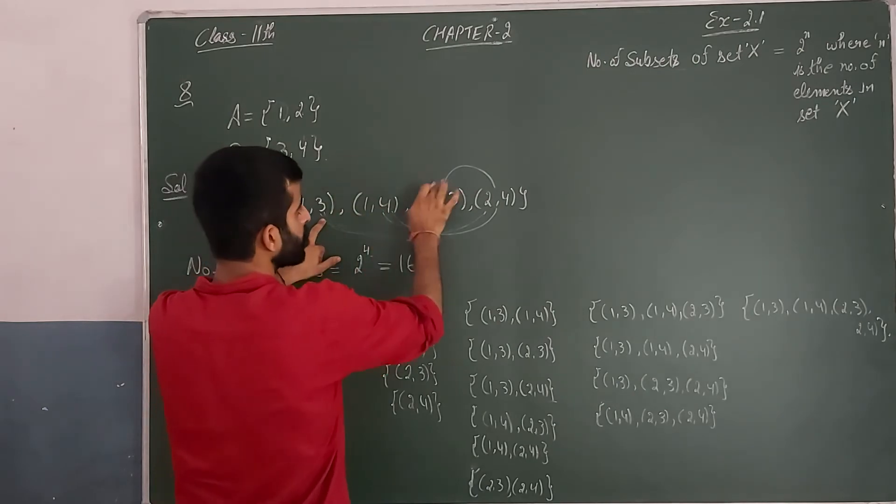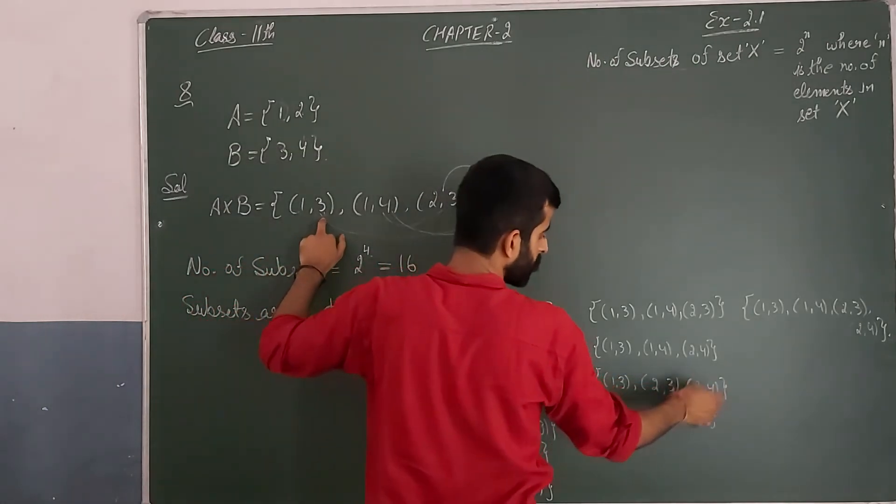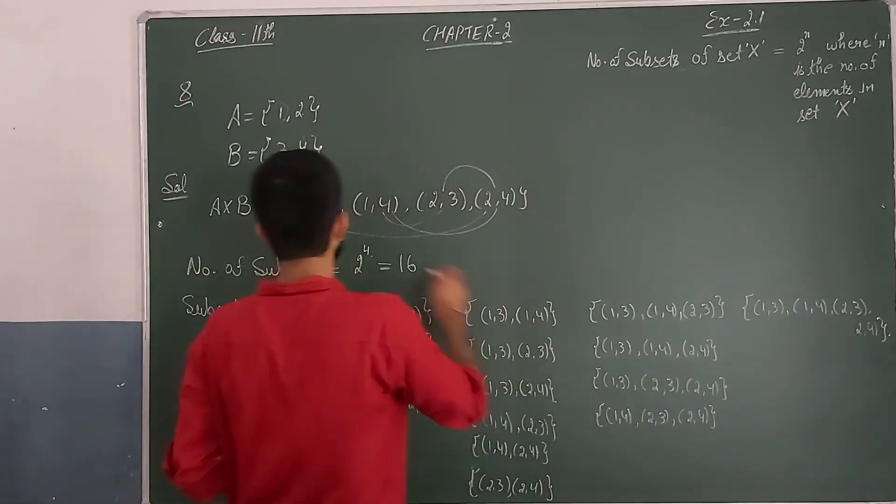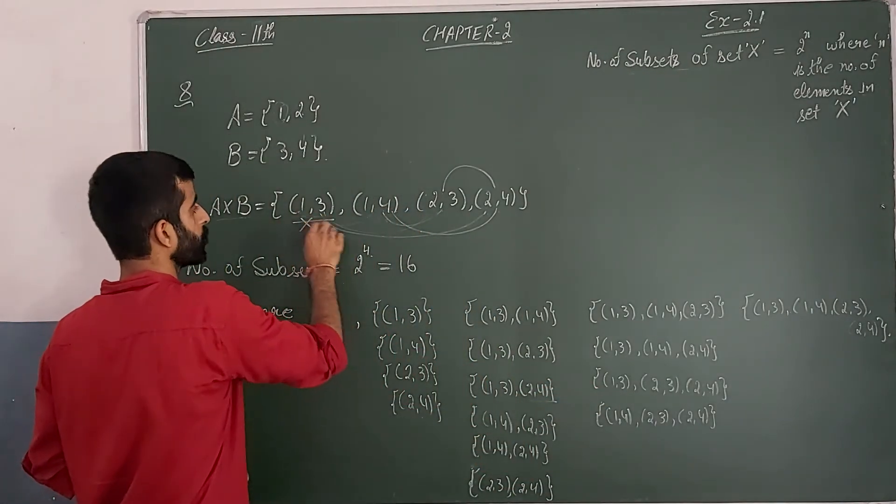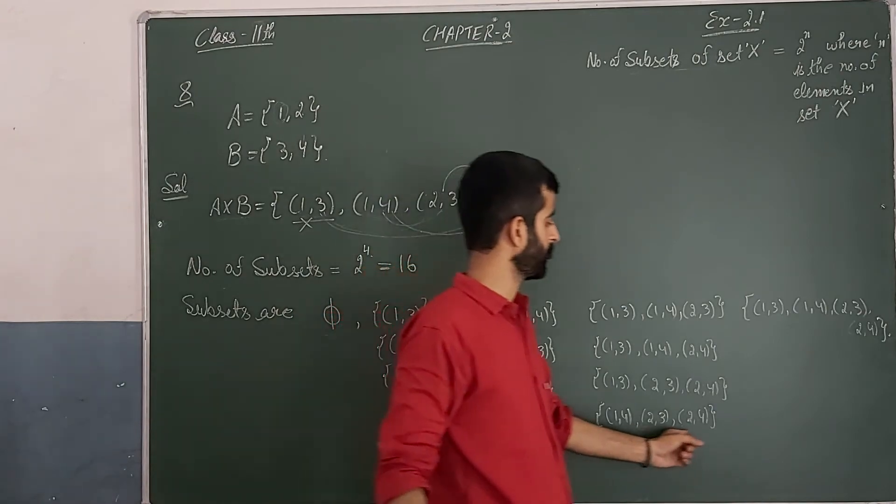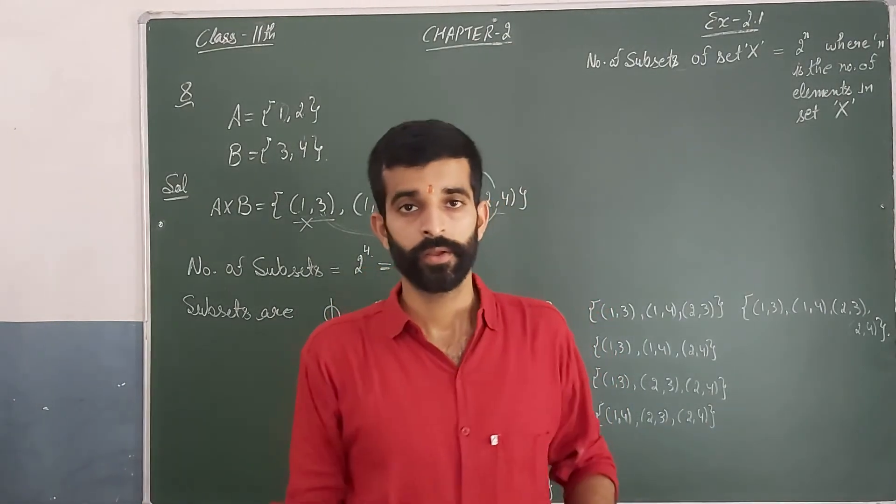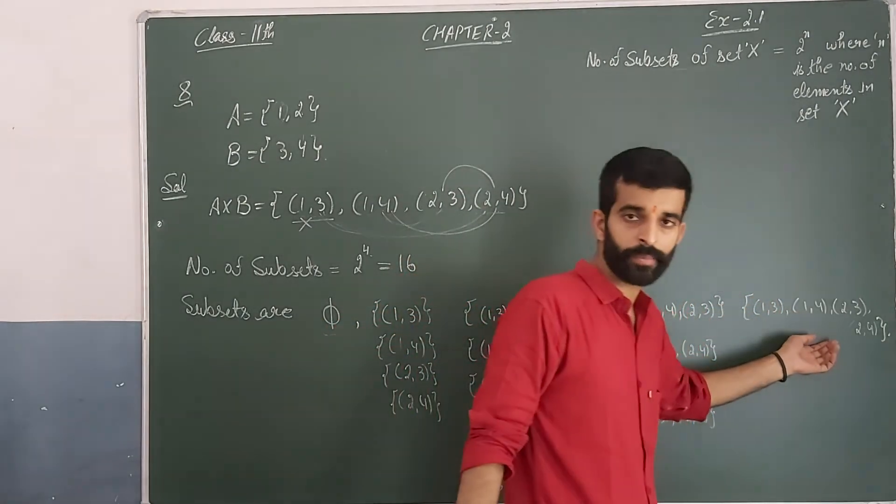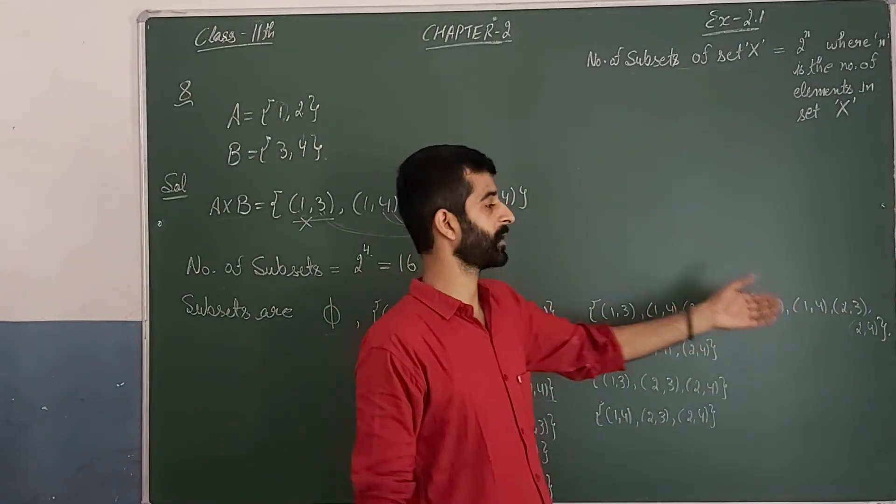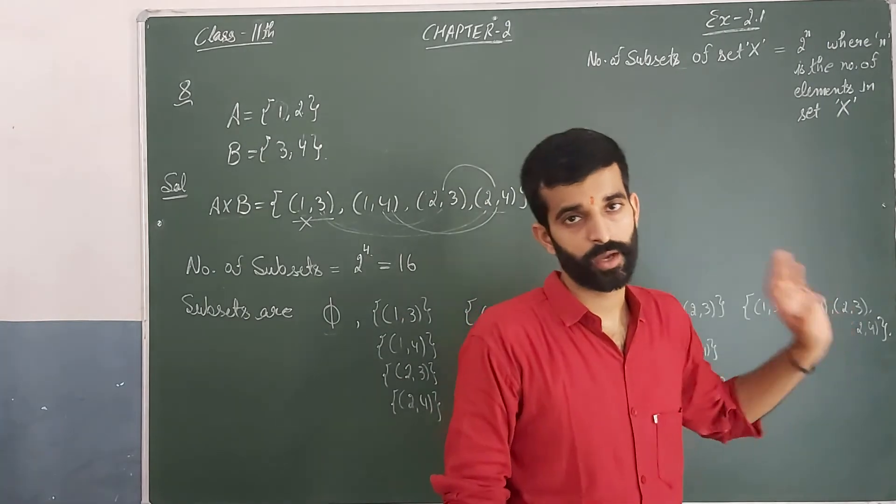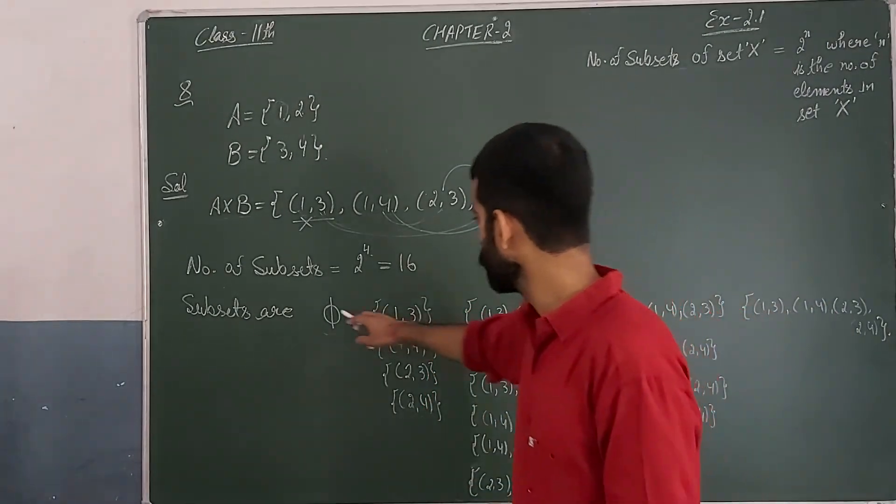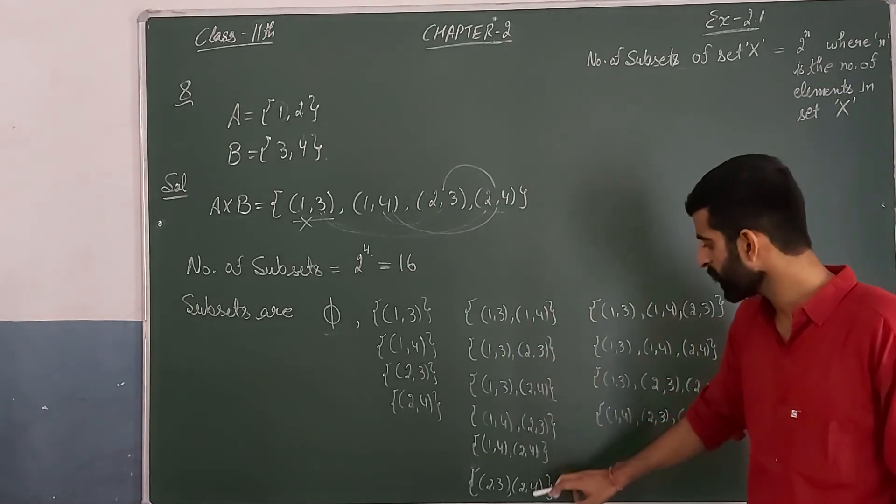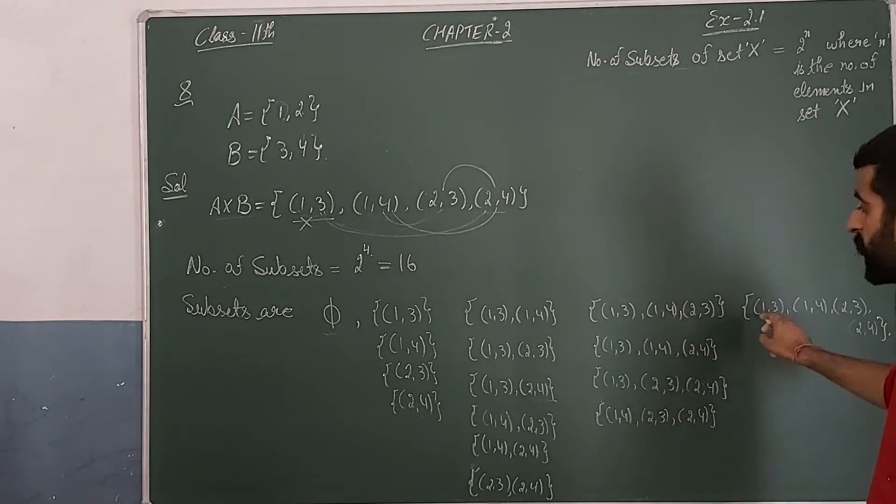The final subset will be the set itself. So we have 16 subsets total: 1, 2, 3, 4, 5, 6, 7, 8, 9, 10, 11, 12, 13, 14, 15, 16.